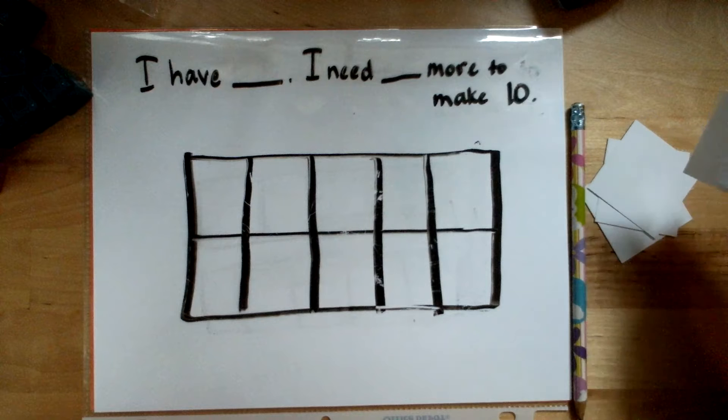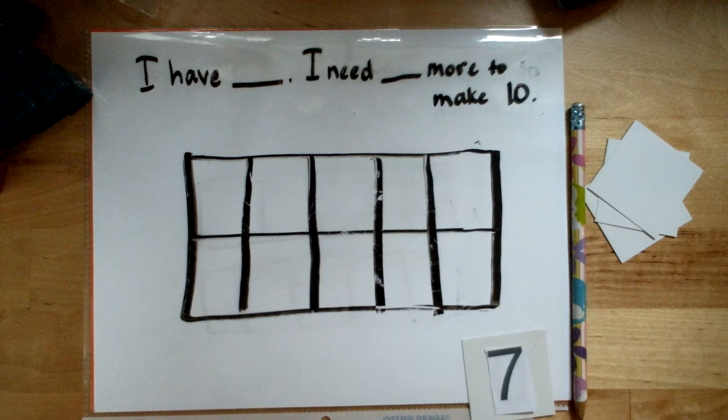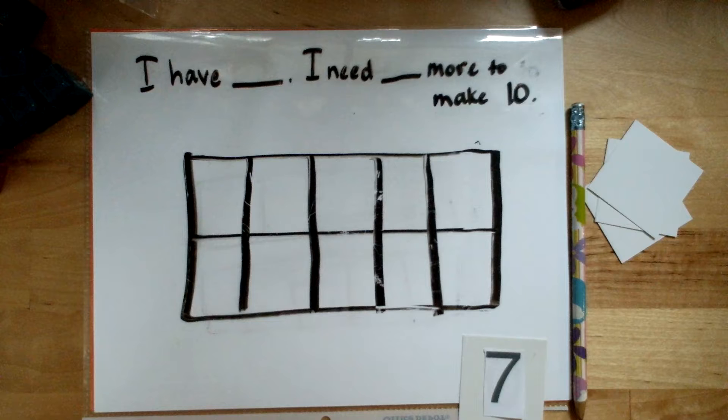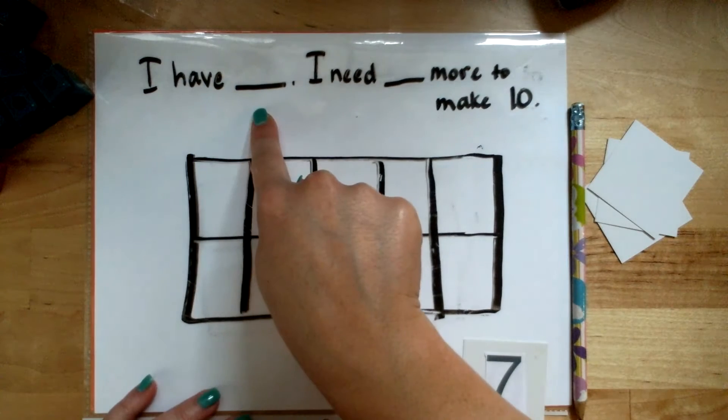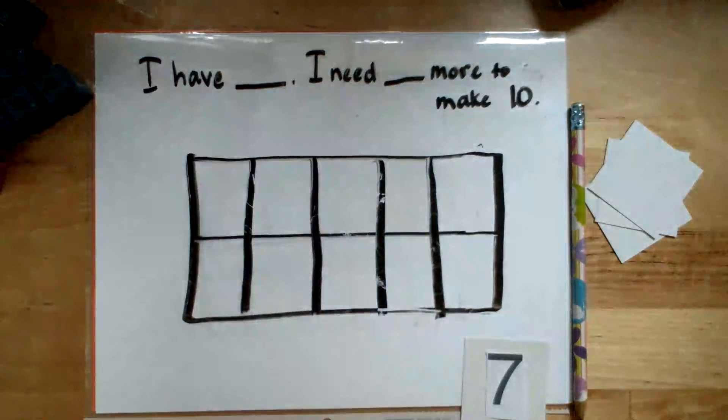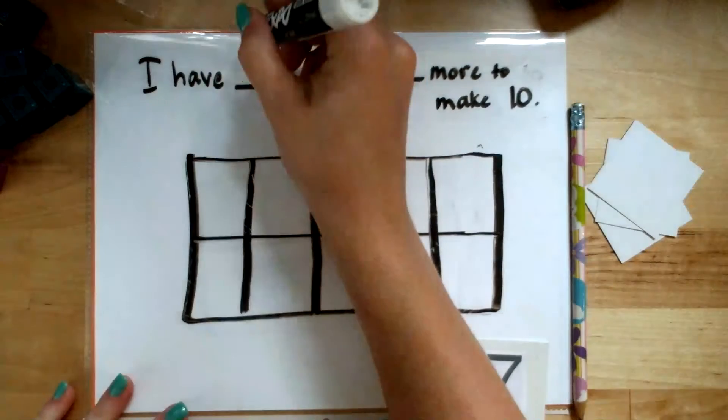I'm going to choose a number card. Seven. I'm going to fill in my ten frame with how many, and I'm going to fill in my sentence. I have seven.